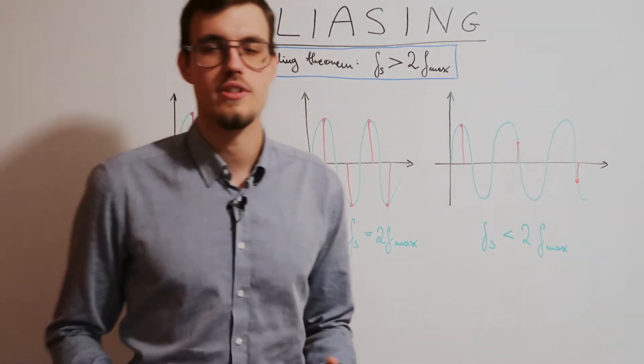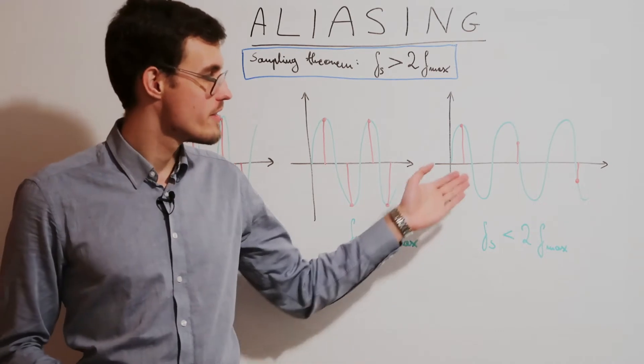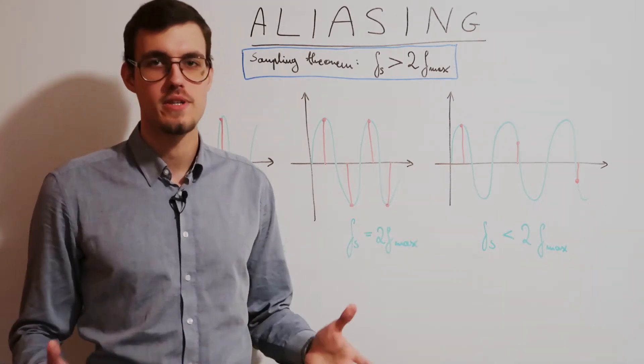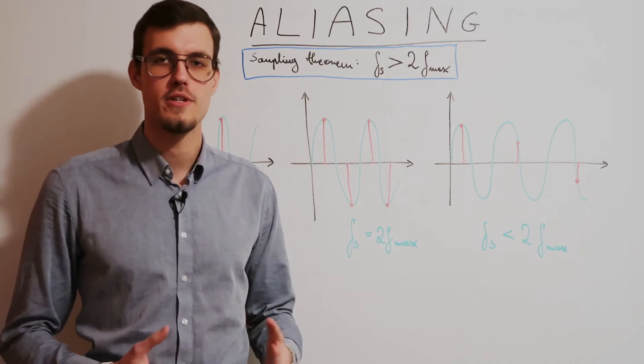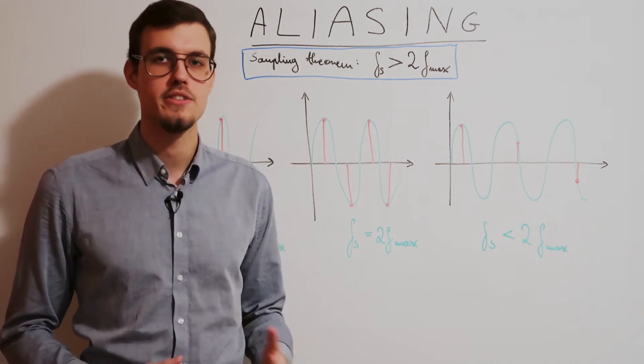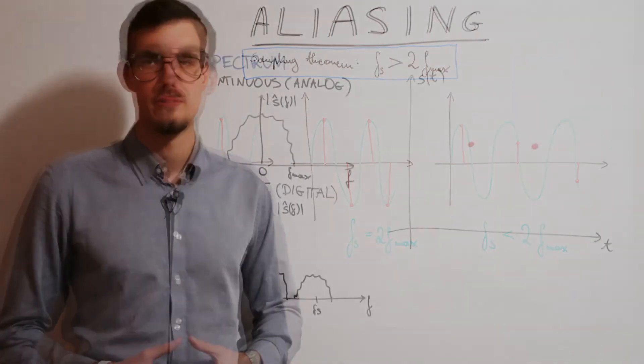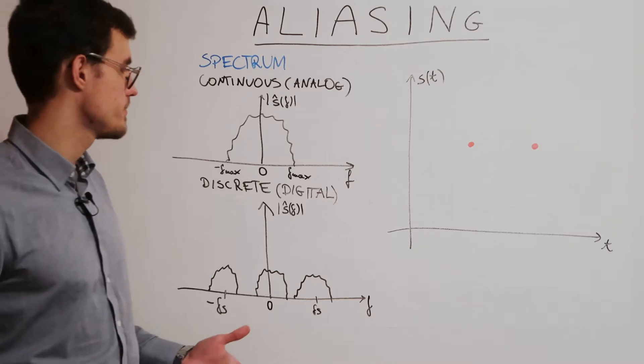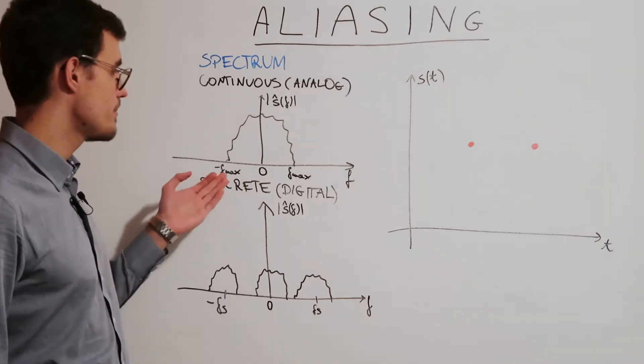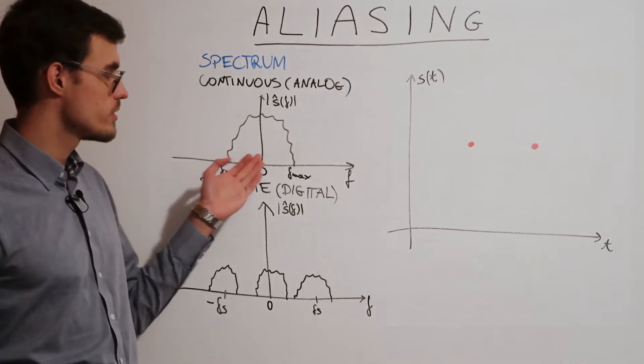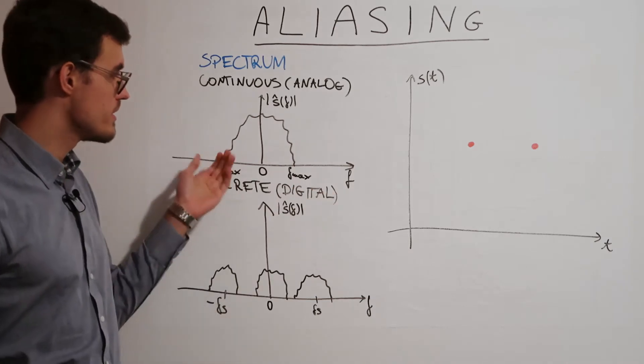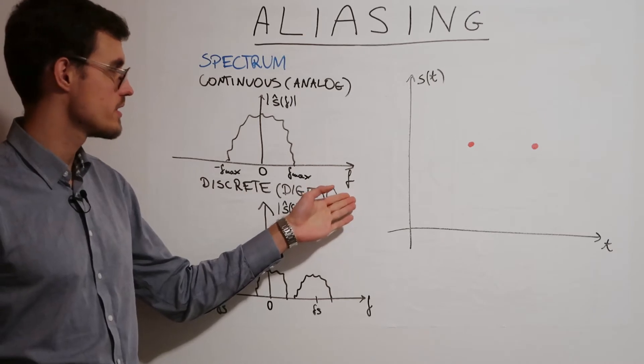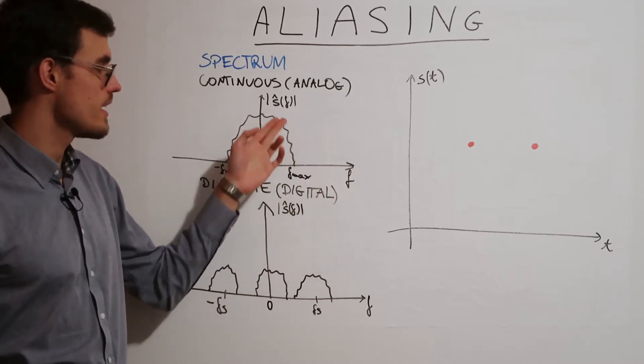Now to look how this aliasing effect looks on the frequency spectrum, we need to firstly talk a little bit about the difference between continuous and discrete spectra. What is a spectrum? An amplitude frequency spectrum is a function of amplitude over frequency. So these are amplitudes of particular frequency components in the signal s.